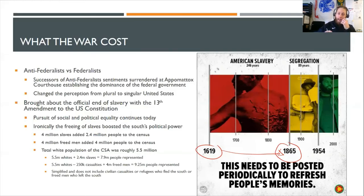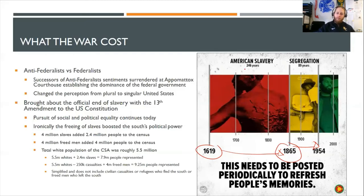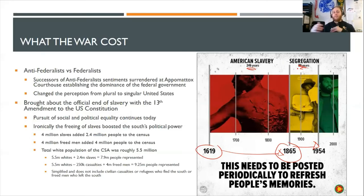Moving forward from 1865 to 1954 — about 89 years — was the era of segregation, also known as Jim Crow, especially in the deep South. That era formally ended with the Supreme Court case Brown v. Board of Education, which ended legalized segregated society. However, there were still many hurdles to overcome regarding racial inequality between Black and white Americans, especially in the deep South — a struggle still being fought today, as seen in the Black Lives Matter movement, because there are still consequences from these institutions and systematic racism within the United States.